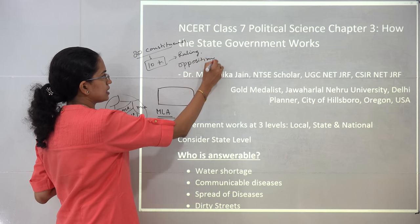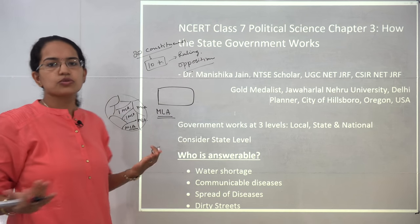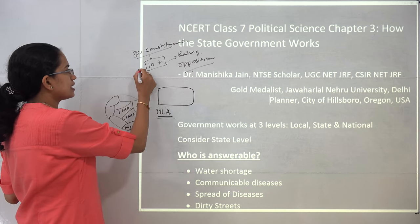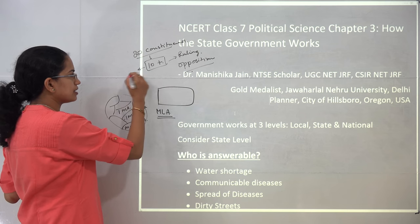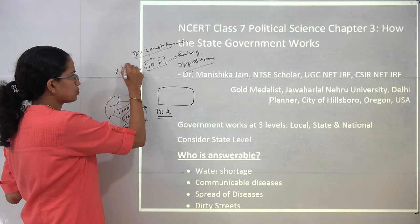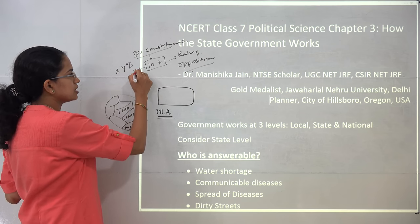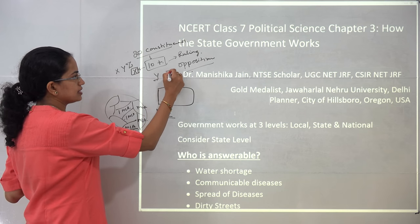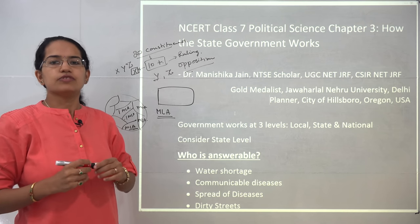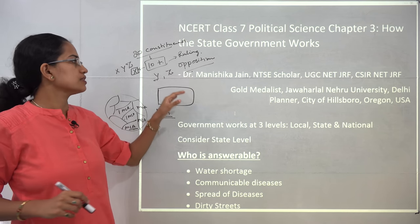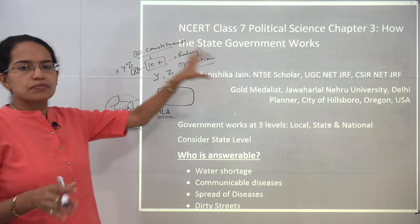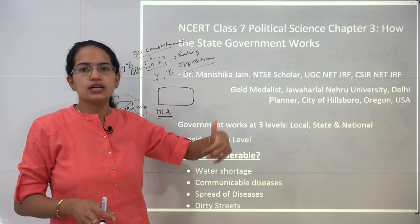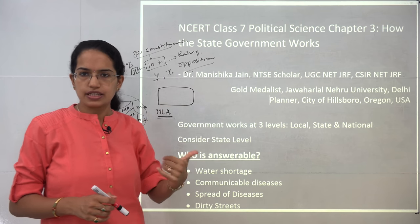To give an example using parties X, Y, and Z — if X becomes the ruling party, then Y would become the opposition, and Z, which represents independent candidates, would also form part of the opposition. What the opposition primarily does is oppose, argue, or question the decisions taken by the ruling government.